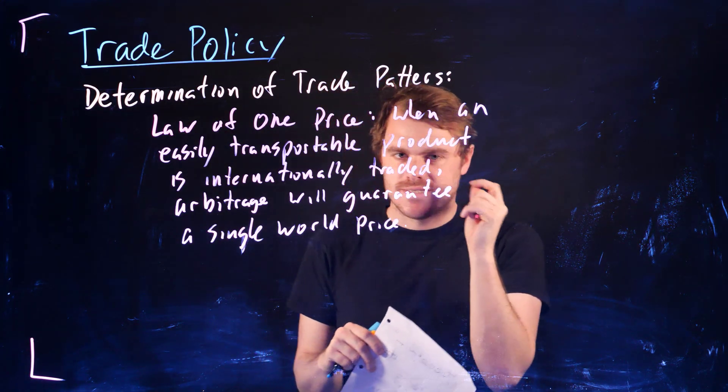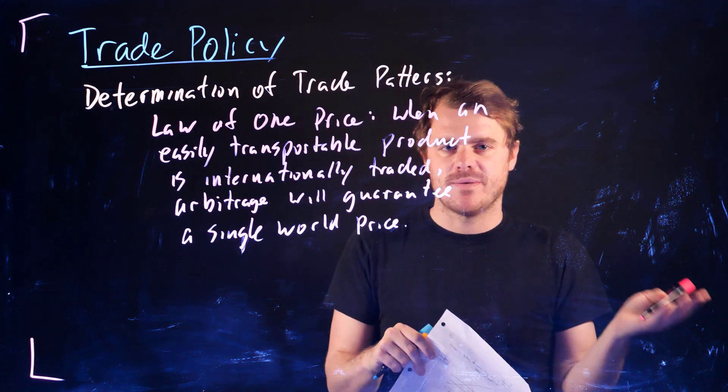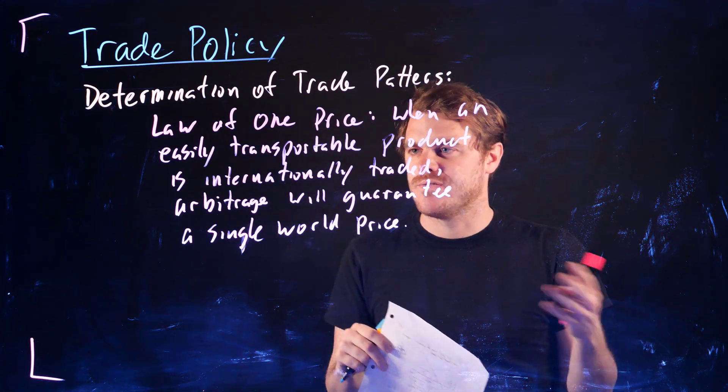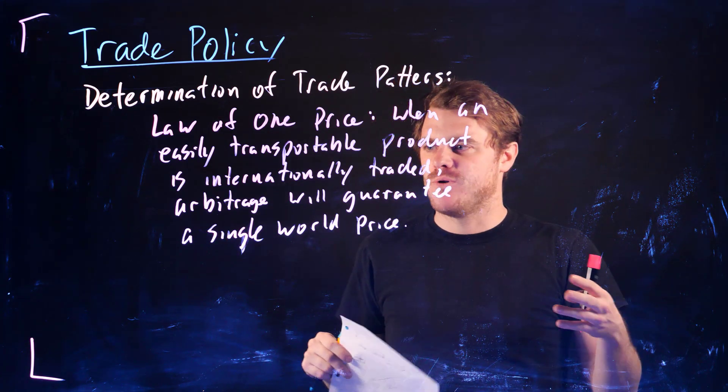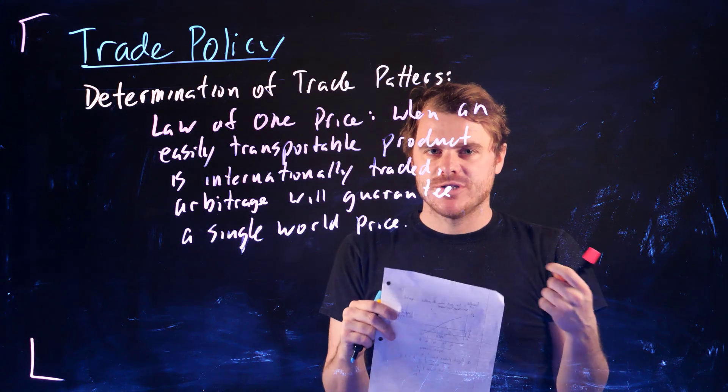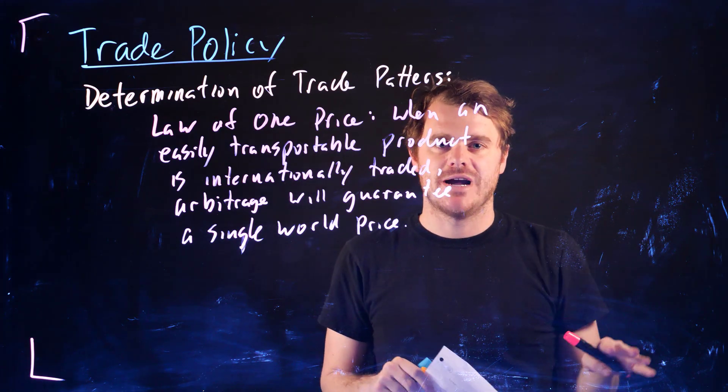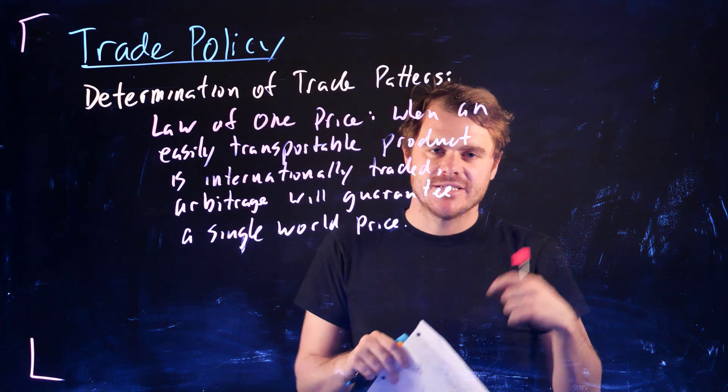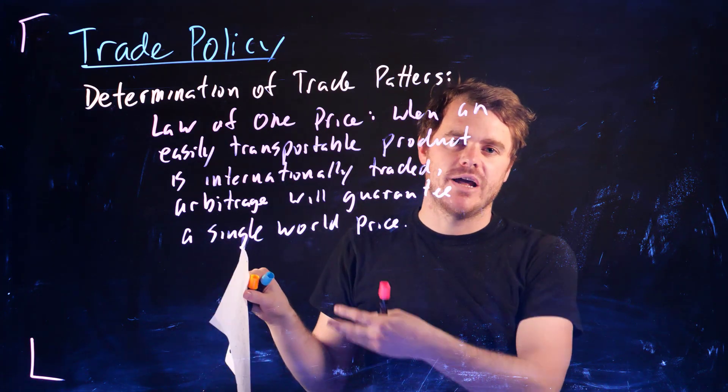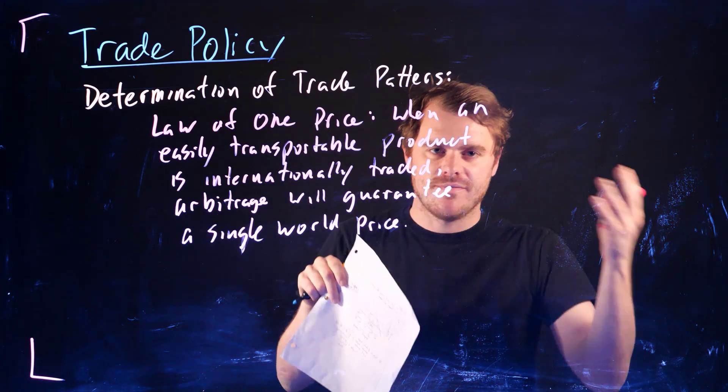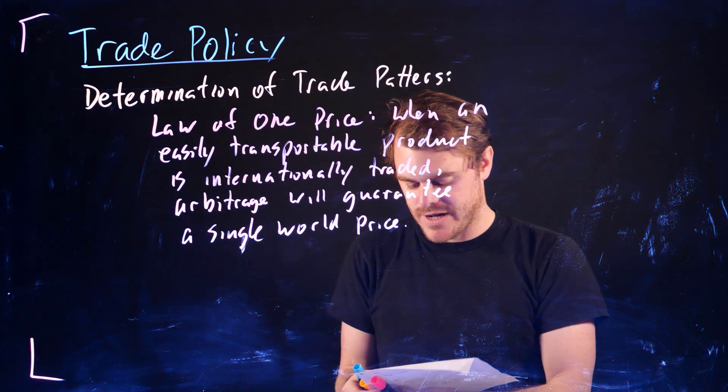So this is the law of one price. When we have a product that we can easily transport, so maybe the transportation costs are fairly low, and it's internationally traded, this arbitrage is going to make it so there's only one prevailing price around the world. Because if there isn't, then someone would take that product from one place and transport it easily to another and sell it there. And so eventually there should be no gains from being able to do that, so we just have one single world price.